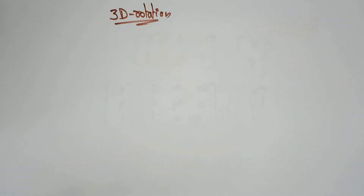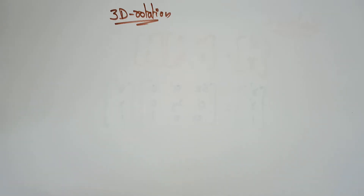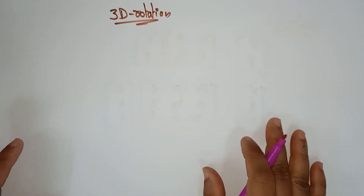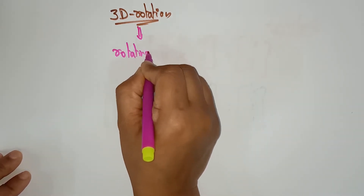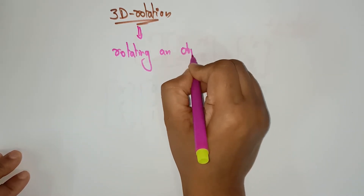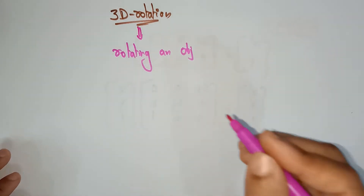Welcome back students. Coming to the next concept in computer graphics is 3D rotation. So far we had discussed about 2D objects and 2D rotations. Now let's see about 3D rotation. A 3D rotation is a process of rotating an object with respect to an angle.